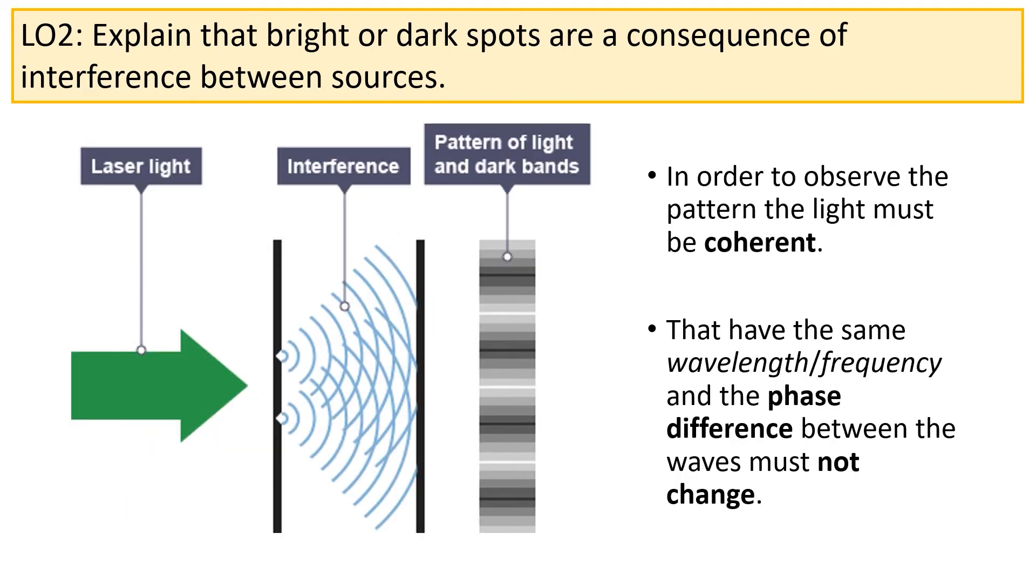In order to observe the interference pattern in a double slit experiment, it's very important that the light should be coherent. The meaning of this is that the light should have the same wavelength or frequency, and that the phase difference between the waves from the two sources should not change over time.